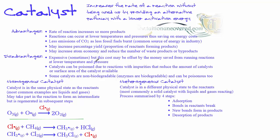Catalysts themselves can become poisoned with time because sometimes reactions have impurities, and those impurities can reduce the amount of the actual catalyst or the surface area of the catalyst available for reactions to occur. Catalytic poisoning is one industrial problem that needs to be addressed, and that's one of the downsides of having a catalyst. Nevertheless, if you know you're saving a significant amount on fuel and producing a lot more products, industrialists may still want to invest in a catalyst despite those disadvantages.